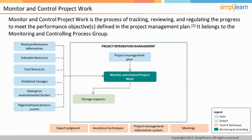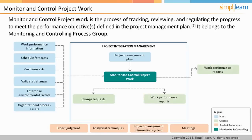If the performance measurement baselines are not being met, this process ensures that the project manager takes appropriate corrective and preventive action to get close to the performance measurement baselines. Along with the recommended corrective and preventive action, monitor and control project work also results in identifying defects which must be taken care of. During the defect repair process, many reports related to the performance of the work of the project will be produced. Project management plan and project documents are also updated.